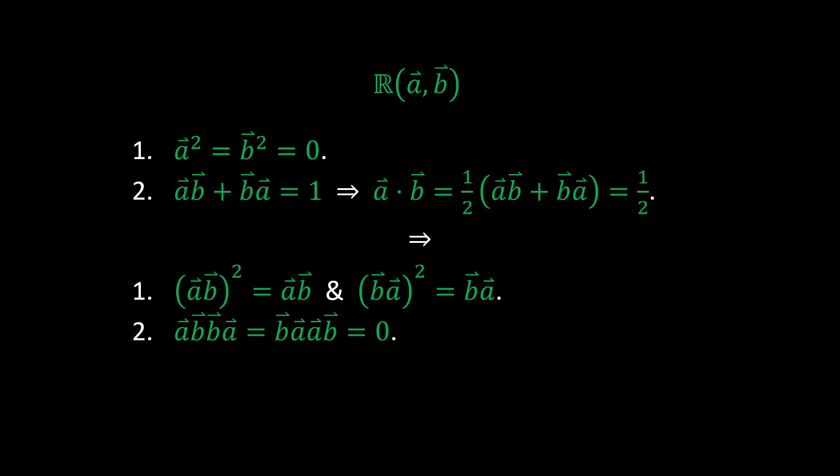The bivectors are seen to square to themselves and are therefore called idempotents. It's also seen that the bivectors AB and BA annihilate each other when multiplied together.